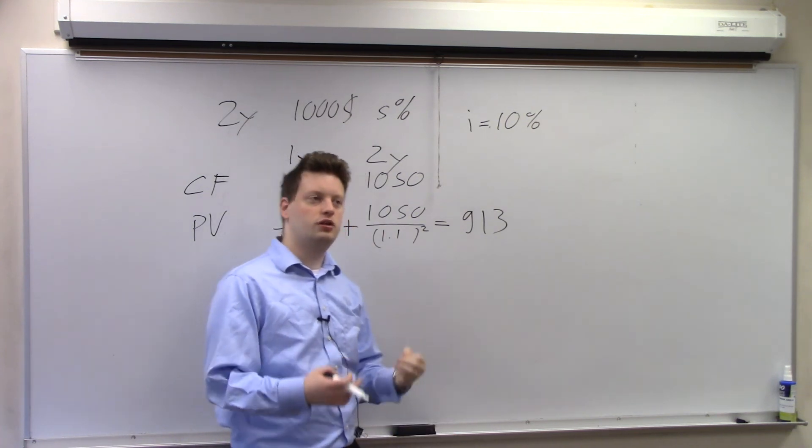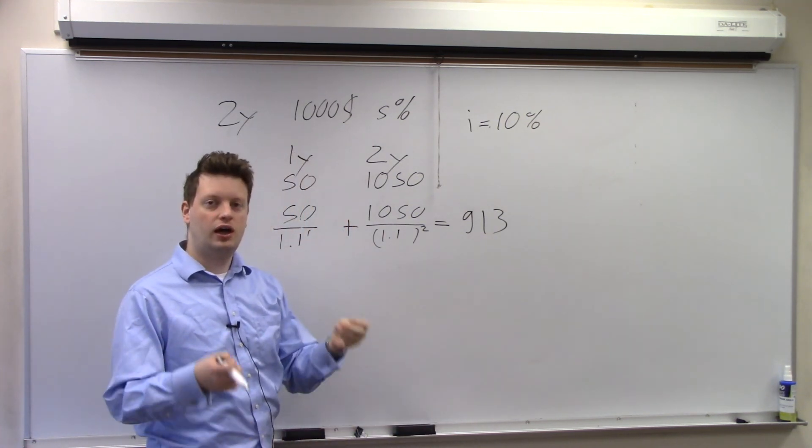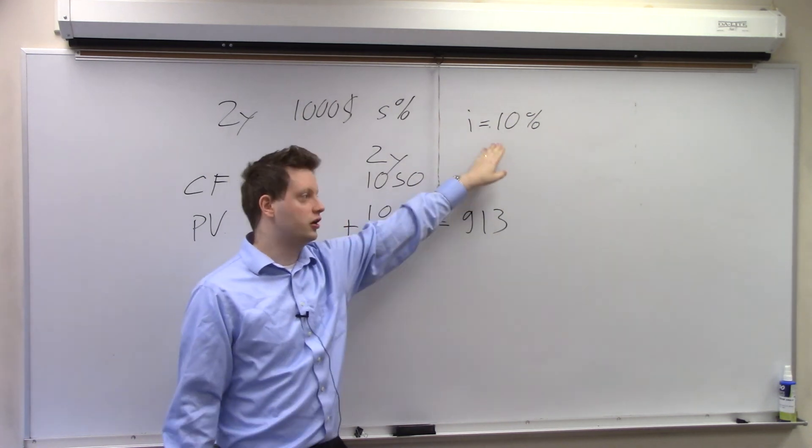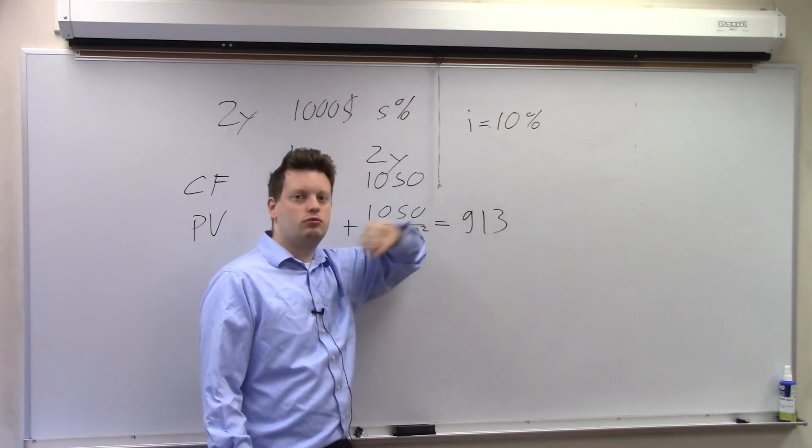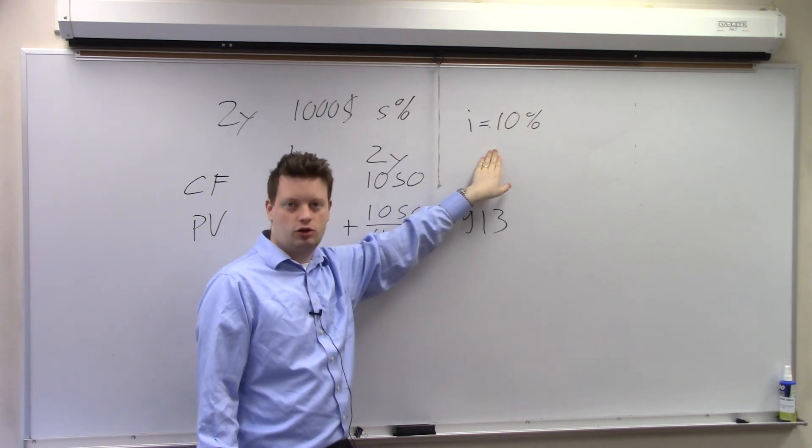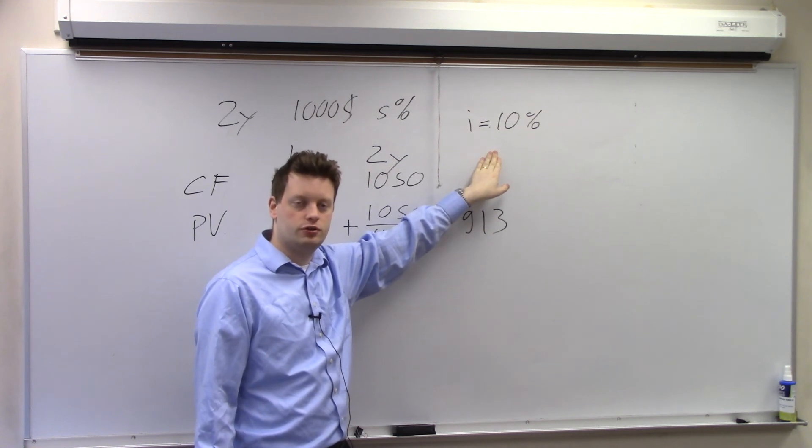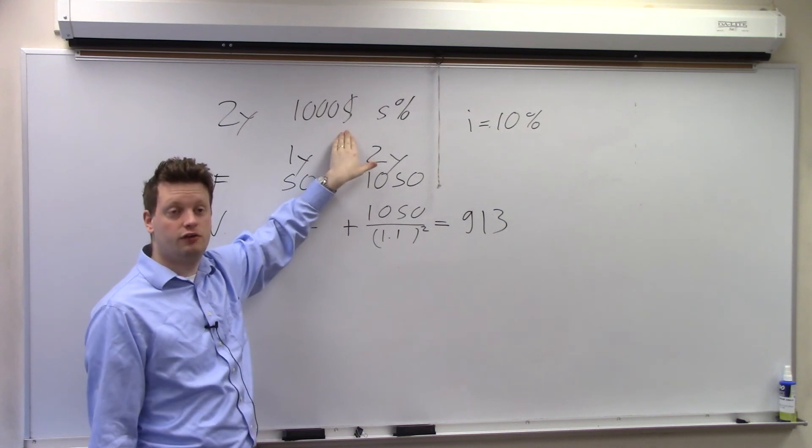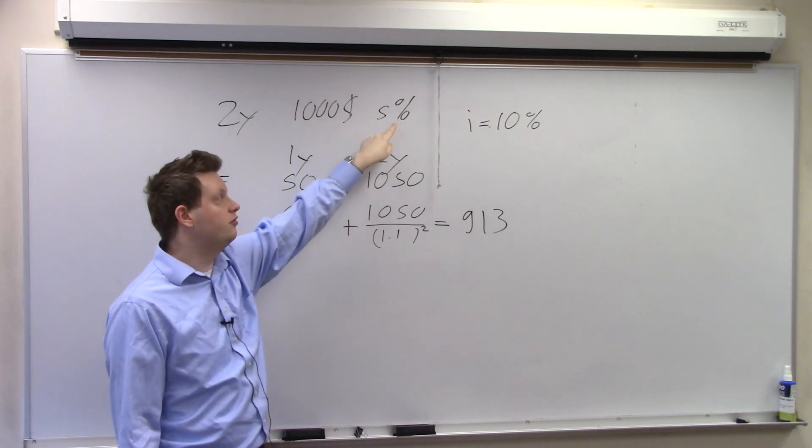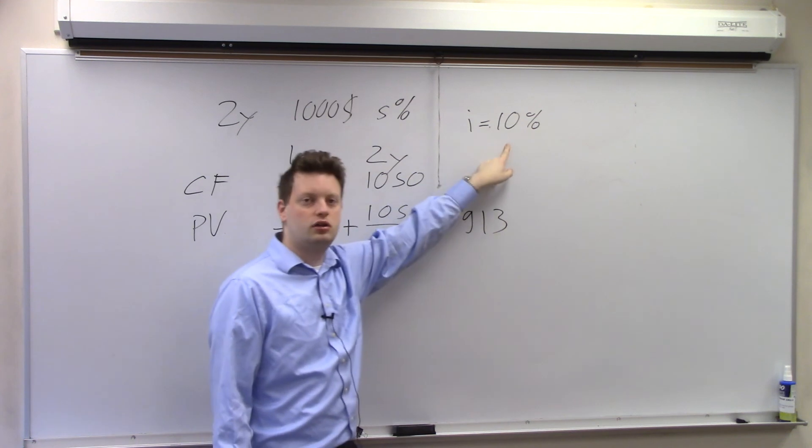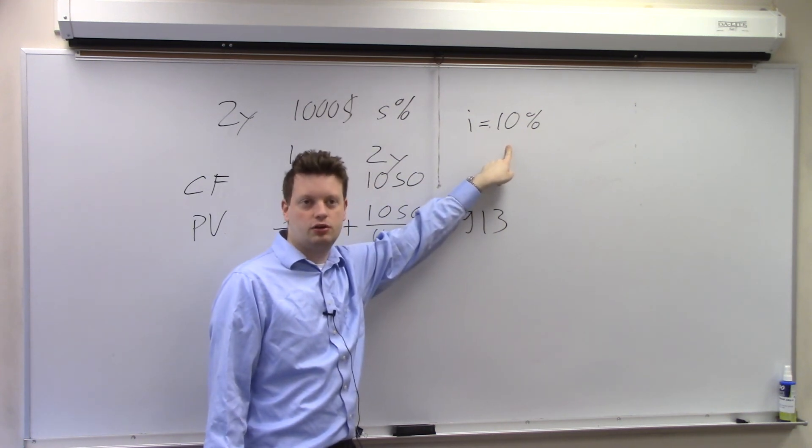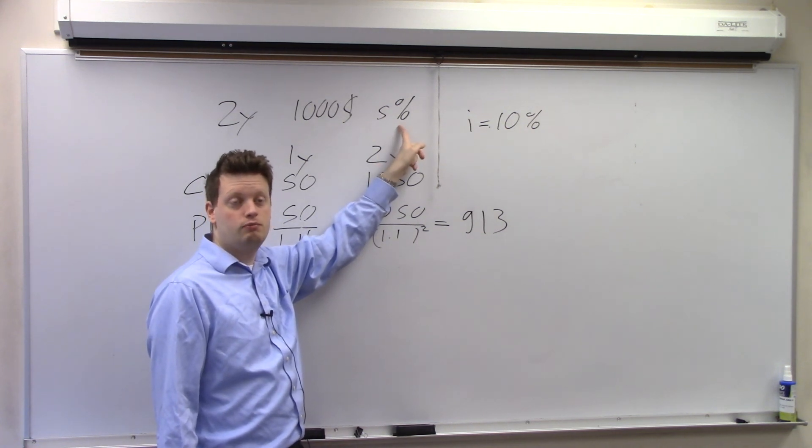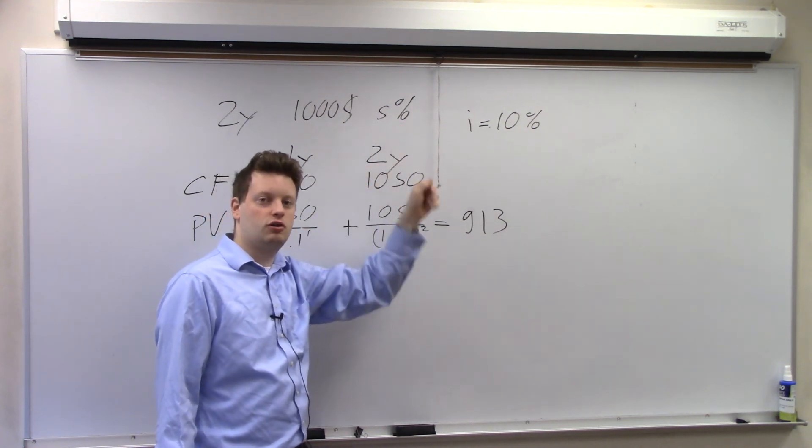Now why is that? Well think of the alternative. As I said in the beginning, the alternative is to put it into a bank account at the market interest rate which here is 10%. If I put $1,000 in my bank account and I earn 10%, I have $1,100 in my bank account after one year. If I buy this bond after one year, I only got 5% interest. That's much lower than 10% I get in the bank account. So buying this bond, which gives me only a lower interest rate, must cost less than the bank account for $1,000.